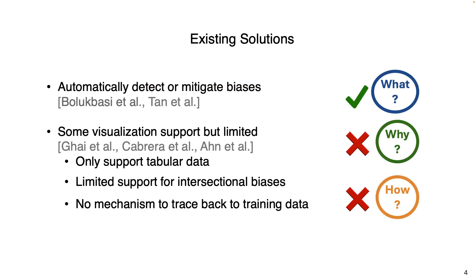Apart from automatically detecting and mitigating predefined biases, some existing work also provides visualization support for bias detection. However, these tools are either limited to only tabular data, or even if they provide support for text data, they lack support for intersectional bias. Moreover, existing solutions can only answer what biases are there, but cannot answer how and why those biases were developed, and there is no option to trace back to training data.